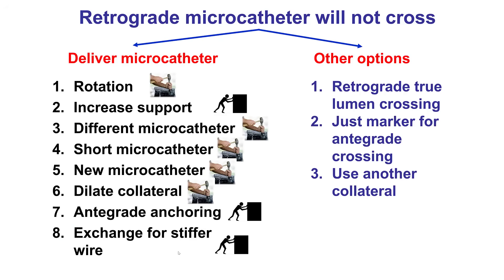This is what to do if the retrograde microcatheter will not cross. The options are to keep trying to deliver a microcatheter through various modification techniques or extra support techniques, or alternatively, try not to deliver the microcatheter but try to either cross or use the wire as a marker for antegrade crossing, or use another collateral. We'll go one by one over those options.